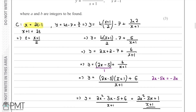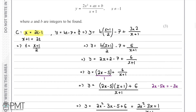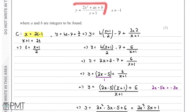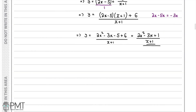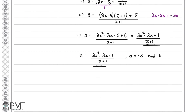Looking back at the question, we wanted y = (2x² + ax + b) / (x + 1), and our answer is y = (2x² - 3x + 1) / (x + 1), which matches that form. We can therefore state that a = -3 and b = 1. That completes the question.